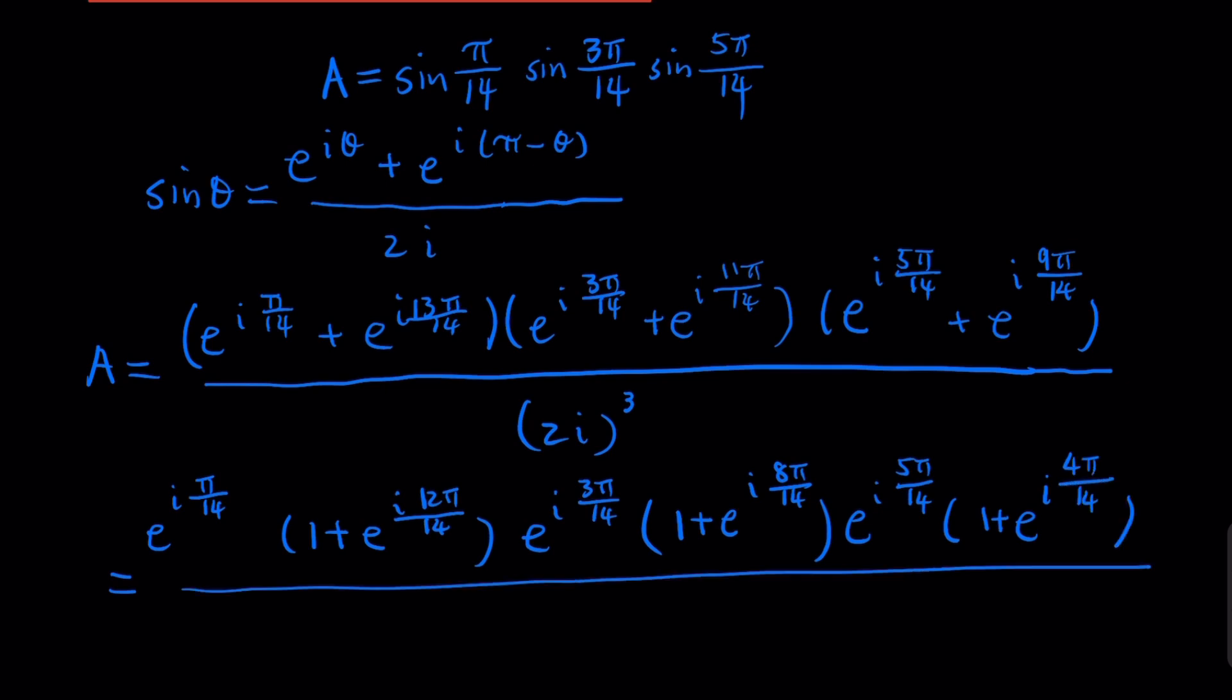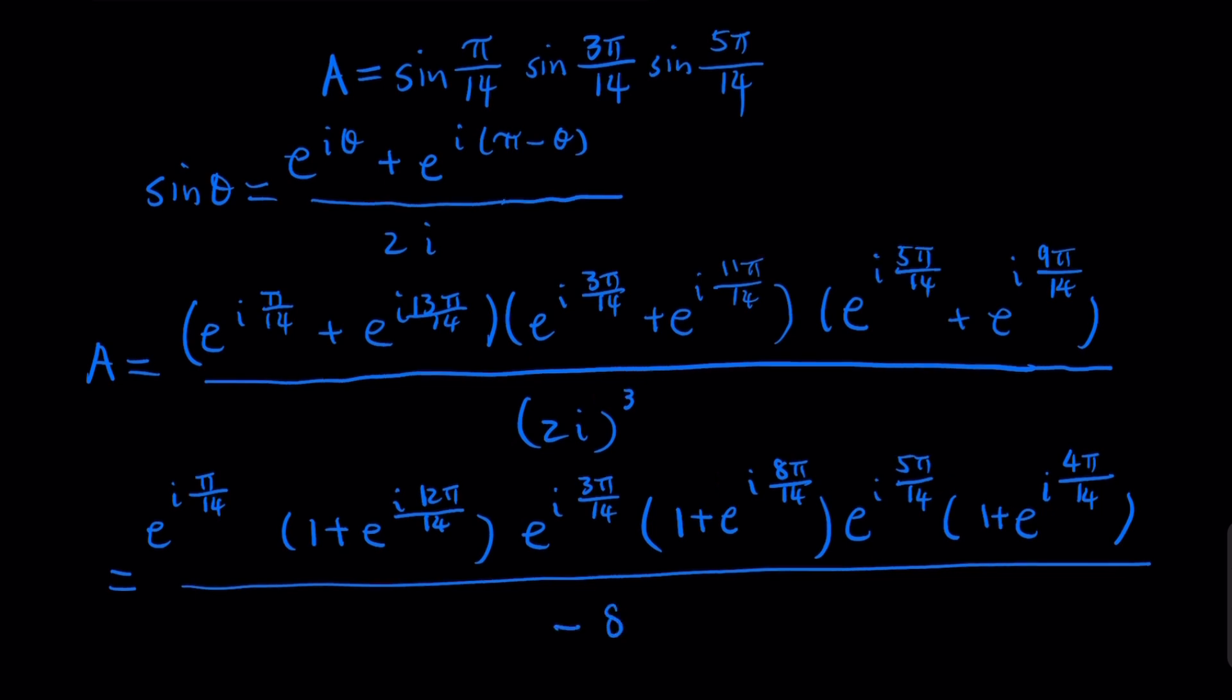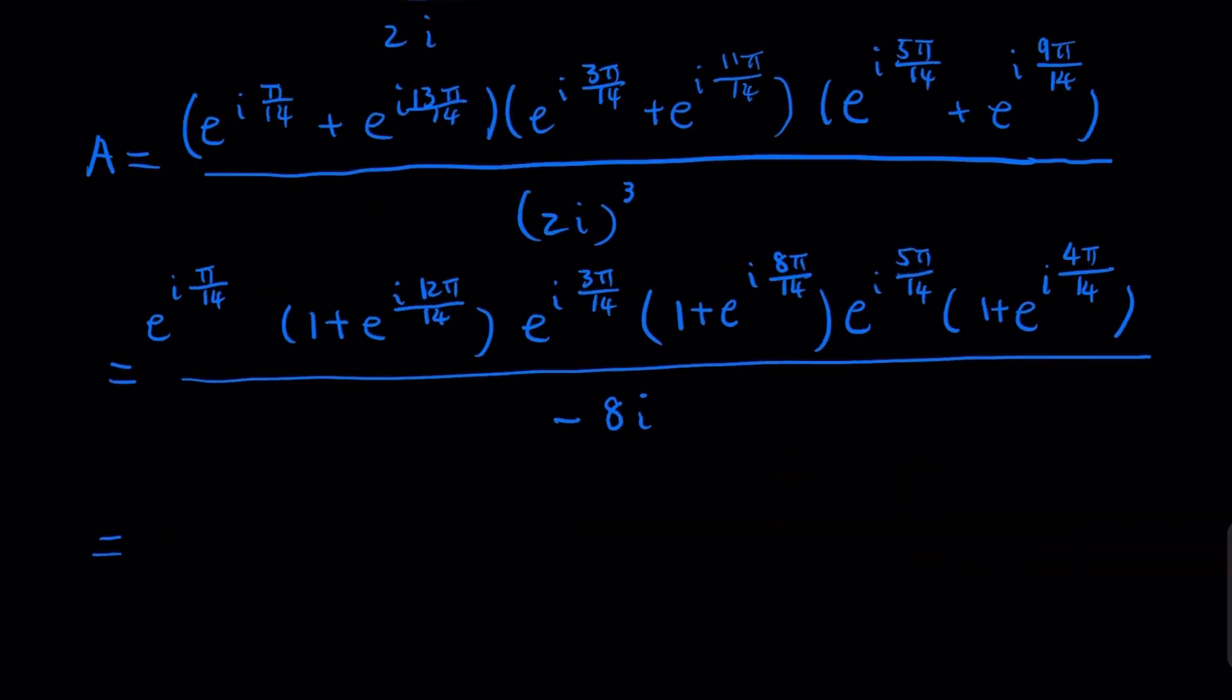And finally, i to the third power is going to be negative i. This is 2 to the third, which is 8, so negative 8i. So what you do here is you're going to expand this term here. For easier notation, we use this symbol here as ω, ω to the third power and the fifth power. Combine them together, ω to the ninth power.